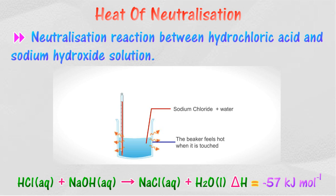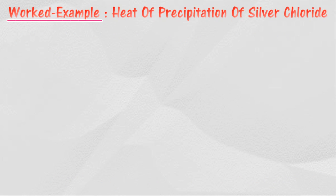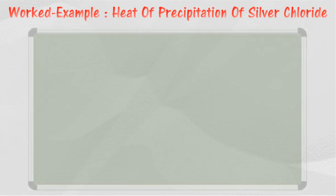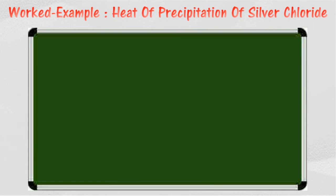One mole of dilute hydrochloric acid reacts with one mole of sodium hydroxide to release 57 kilojoules of heat. Therefore, the heat of neutralization between hydrochloric acid and sodium hydroxide is minus 57 kilojoules per mole.